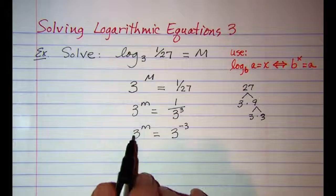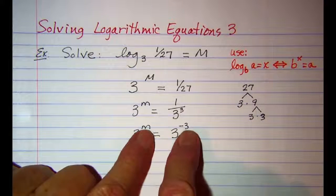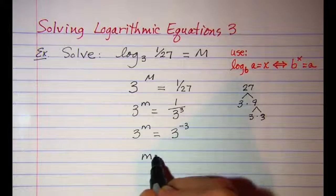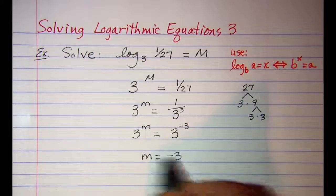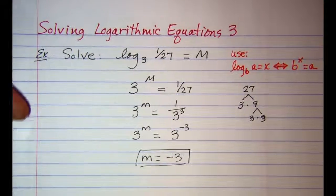Now when we have two expressions that are equal and their bases are equal, then the exponents have to be equal. So we have m equals negative 3. Let's try another one similar.